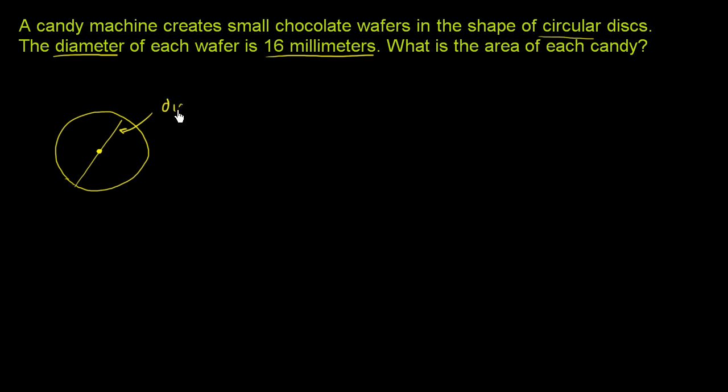So let me write that. So diameter here is 16 millimeters. And they want us to figure out the area of the surface of this candy, or essentially the area of this circle. And so when we think about area, we know that the area of a circle is equal to pi times the radius of the circle squared.